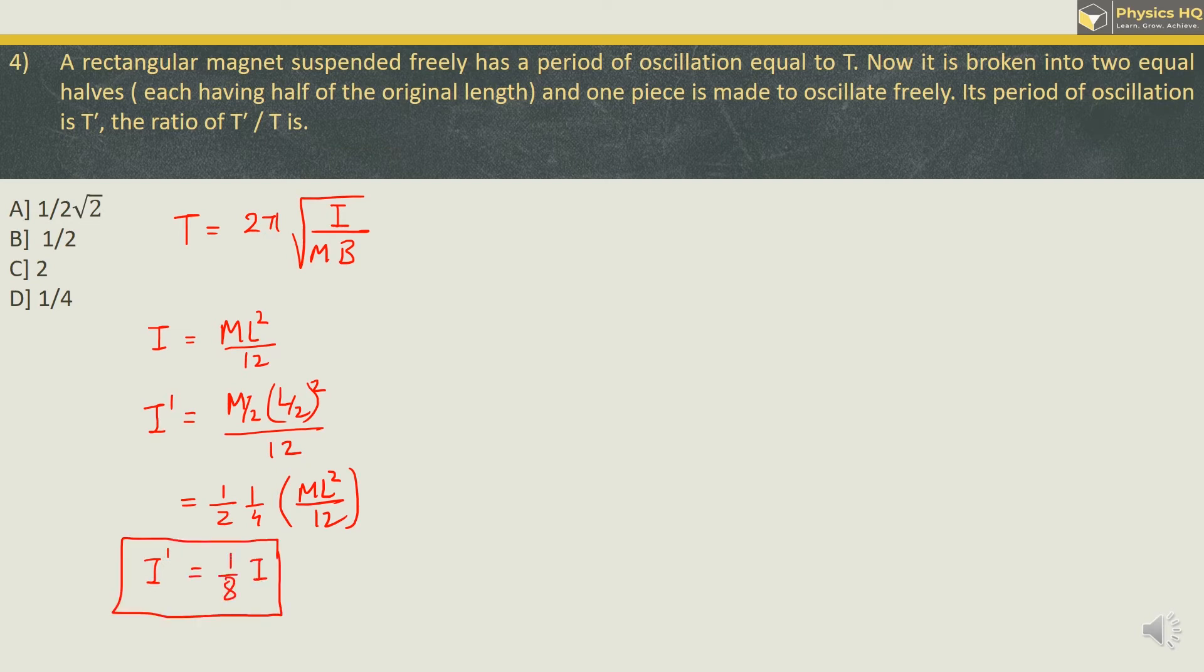Now let us talk about the magnetic moment M which is given by the pole strength into the length of the magnet. Now in this case the pole strength is not changing. Therefore for the new magnetic moment will have same pole strength, but the length is divided by 2. So we can say that the new magnetic moment is half of the previous one.